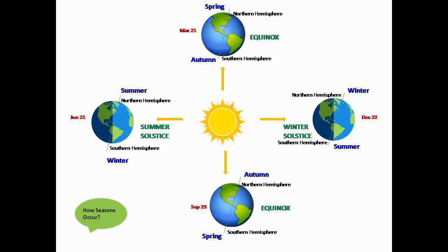On March 21st and September 23rd, Sun rays pass directly over the equator. On these days, the entire planet receives equal day and night — we call this day the equinox. During March, the Northern Hemisphere has spring season and the Southern Hemisphere enjoys autumn. In September, the Northern Hemisphere receives autumn and the Southern Hemisphere has spring season.